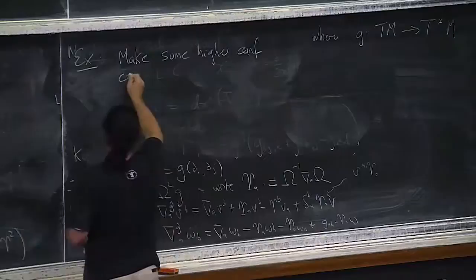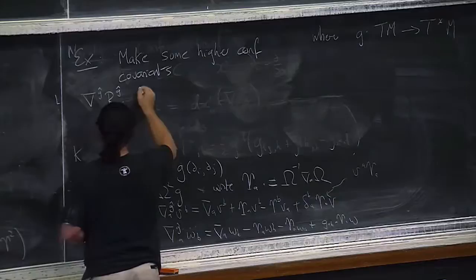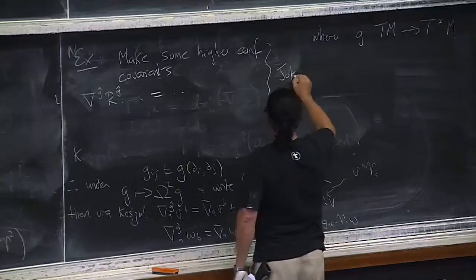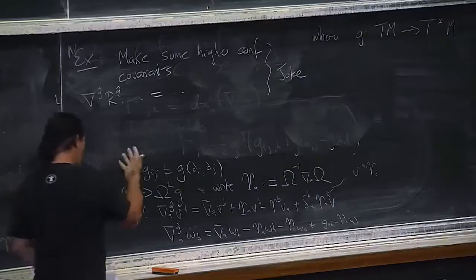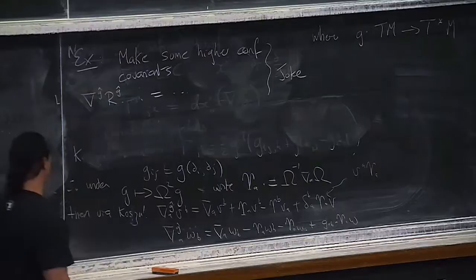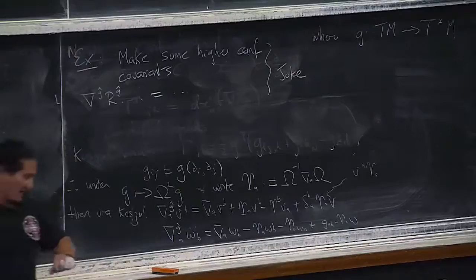Here's the next part of the exercise: make some higher order conformal covariants. You'll have to start with computing at least the transformation of the Schouten tensor and play around to try to make some. But this is also a sort of joke, because what you'll quickly discover is you've got a page of epsilons to start with, and even with software you can probably only make invariants up to order four or five — then even your software will start having trouble. Things really blow up exponentially.